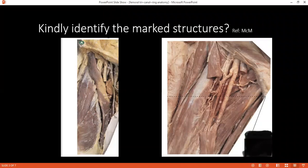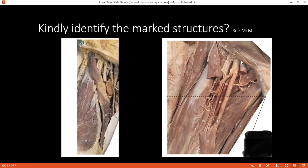Can you identify the structures on the right-hand side picture? Can you identify structure 11? It is also an inguinal ligament. One small structure that you can see is 21 — can you identify that one? It is a very important nerve.